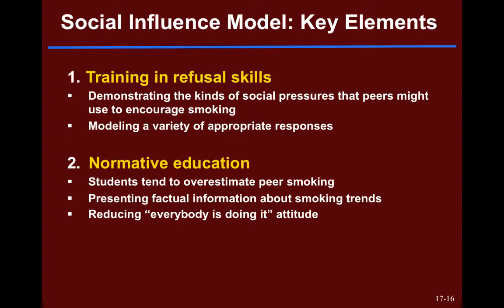That's one of the lessons learned from working with the smoking population, which we put to use in developing the social influence model. The first of five key elements is training in refusal skills — demonstrating the actual kinds of social pressures that peers might use, not just 'you'll face peer pressure,' but showing what it actually looks like. Then modeling and role-playing appropriate responses, practicing how to say no, so when you're in the situation you've done it before.